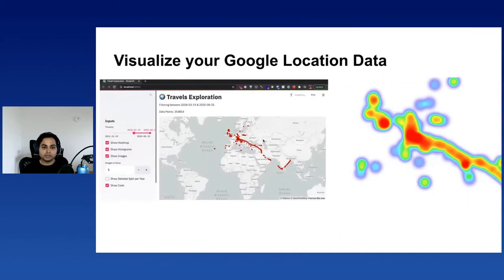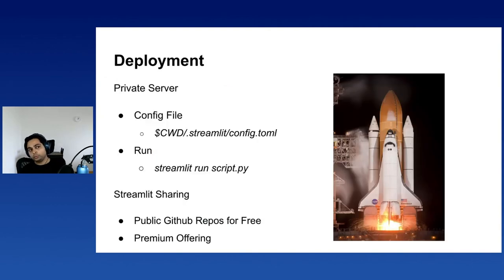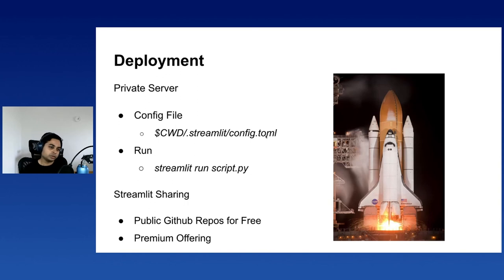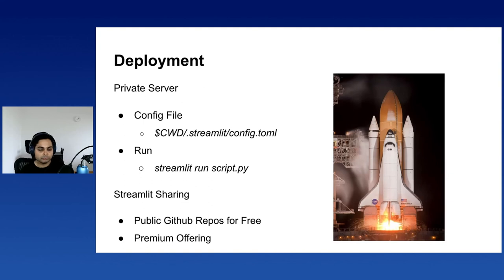Let me go back to the presentation. How do you deploy this app once you have it? It's quite straightforward — there are two options. One, you can run it on your private server or machine, in which case you create a config file. The config file tells you which port the app should run on and whether it's running in headless mode. You can just run it using 'streamlit run script.py', and if there's a Streamlit config file in that folder, it's detected automatically. The other option is Streamlit Sharing, a service provided by them that allows you to deploy your public GitHub repos for free. There's a limitation of three applications running at the same time, but they have a premium offering for private repos. In this case, I didn't use public sharing because I didn't want to share my location data with the entire world.